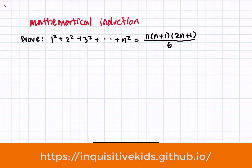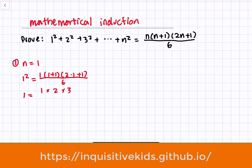Our first step is to see what happens when n is equal to 1. When n is equal to 1, let's test this out. We have 1 squared is equal to 1 times (1+1) times (2×1+1) over 6. That's the same thing as 1 equals 1 times 2 times 3 over 6. On the right side, that simplifies to just 1, and we know that 1 equals 1 — this is true.